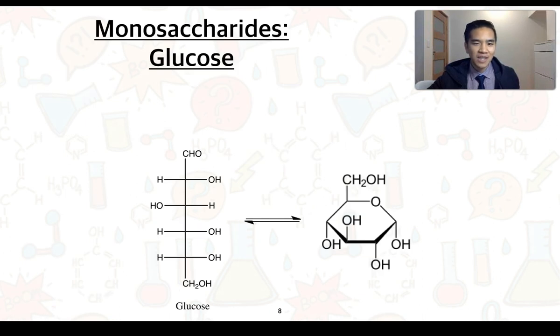Starting with monosaccharides, and in particular glucose, we can see here it's got the structural formula in a chain form and a cyclic form. We can look at determining its molecular formulas, so counting the carbons first. We can see 1, 2, 3, 4, 5, 6 carbons. Hydrogens, we've got 2, 3, 4, 5, 6, 7, 8, 9, 10, 11, 12 hydrogens.